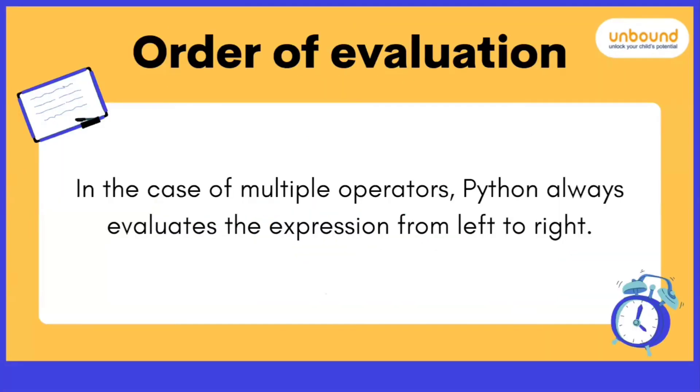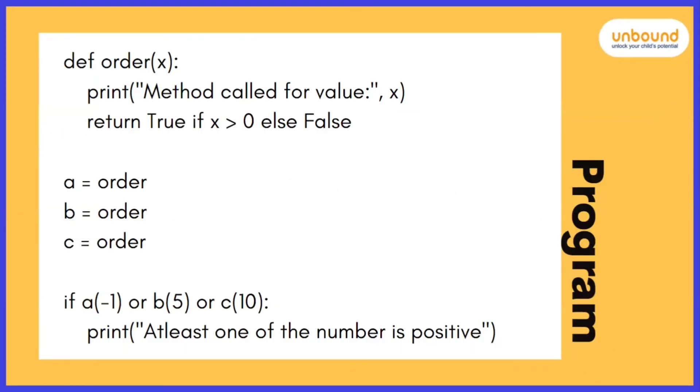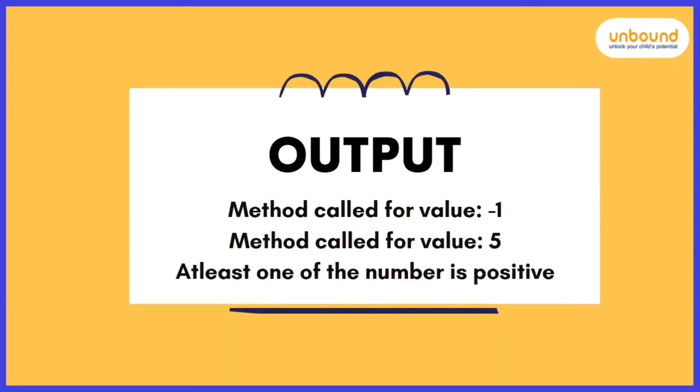Now just like previous example, we had two operators, NOT and OR. There was a huge confusion which operator needs to be evaluated first. So let's understand this case. In the case of multiple operators, Python always evaluates the expression from left to right. So here's the program. Now I want you to evaluate this program by yourself. And here is the output for this.